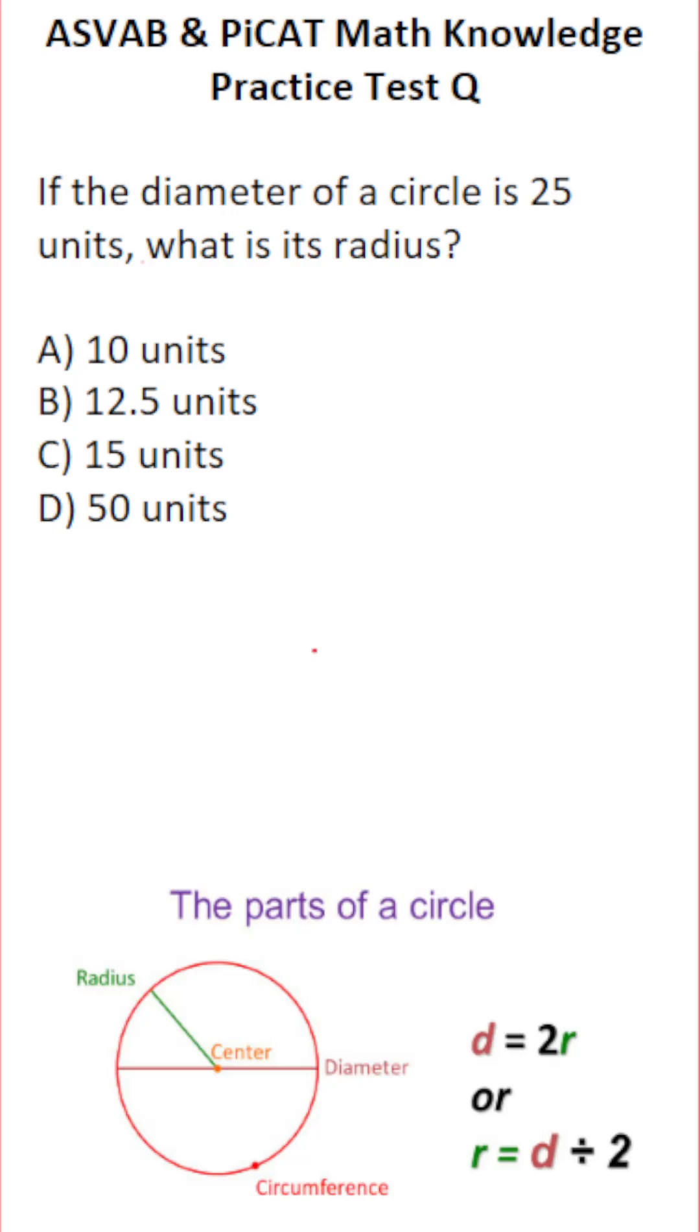So for the ASVAB and PICAT, you do have to know some things about circles, including the parts of the circle, as well as how to find the area and circumference of a circle.